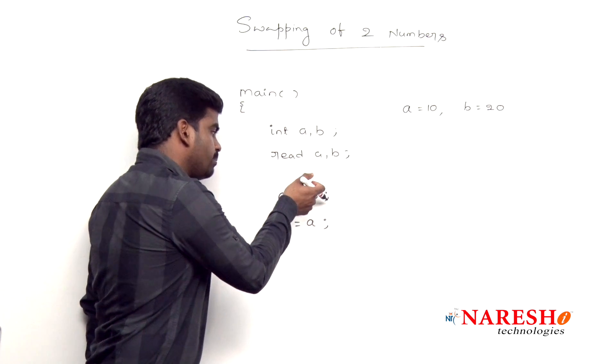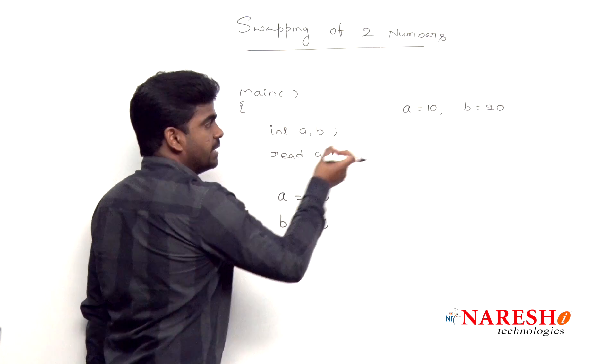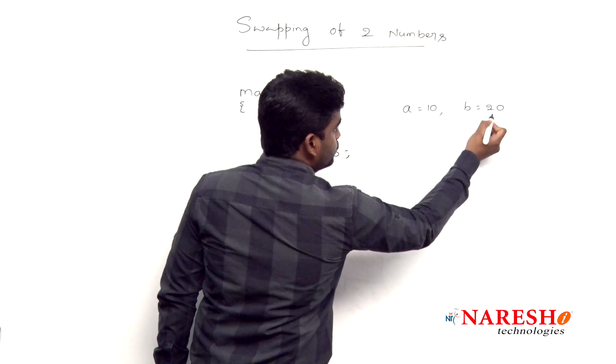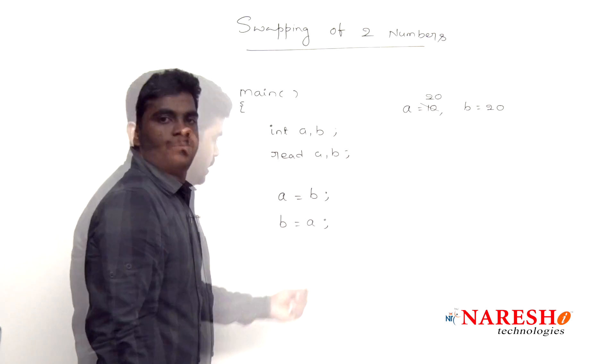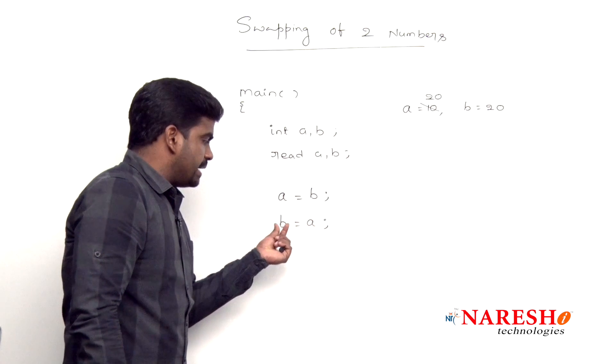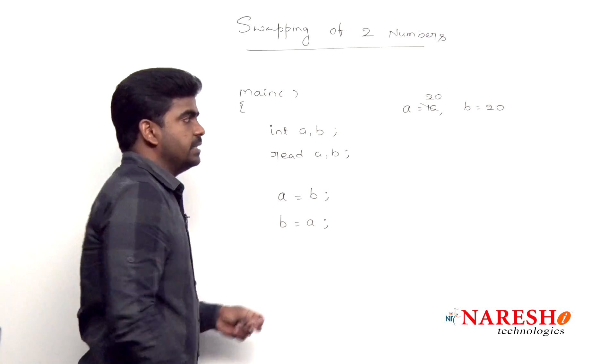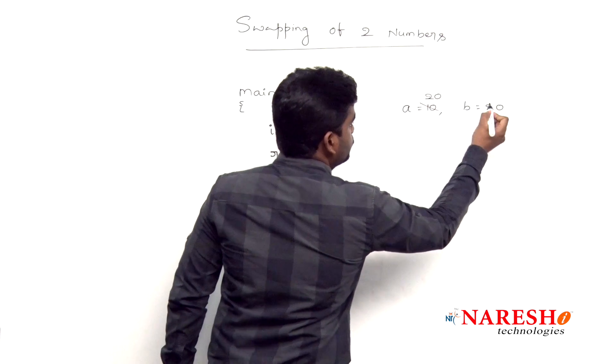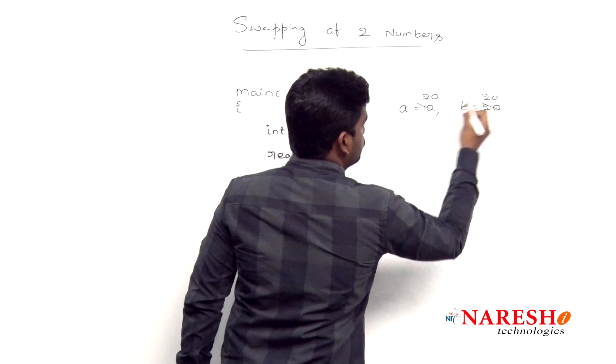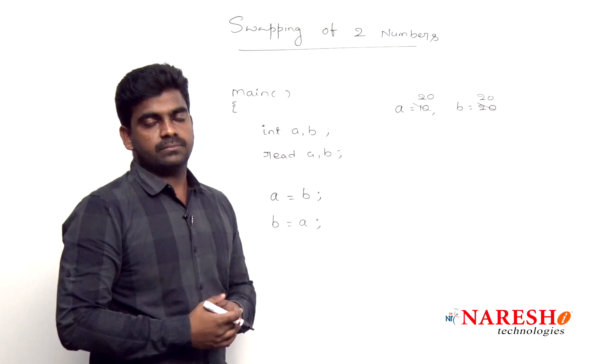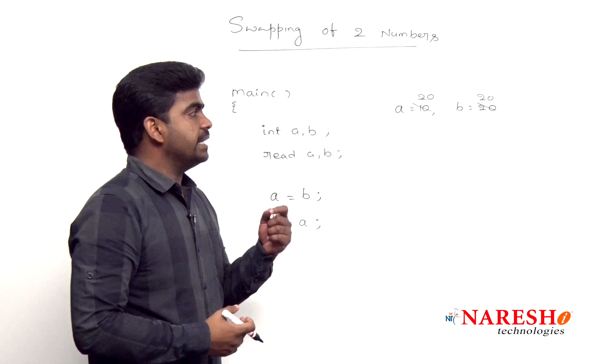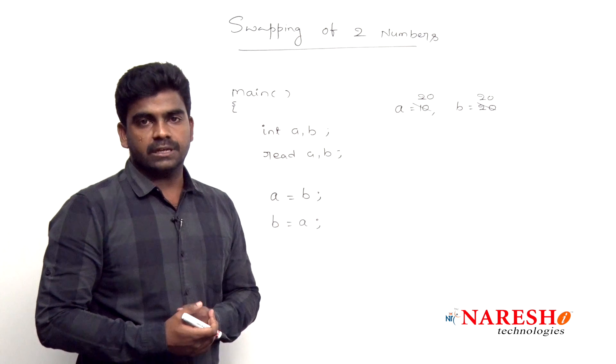See, whenever we're assigning the b value to a, b value is 20, so 20 will go and store into a, then we lost the a value. Next, when we assign a value to b, then a value 20 will go and store into b. So the final values become 20 and 20. We lost the value 10. That's the reason we're taking the help of one temporary variable.